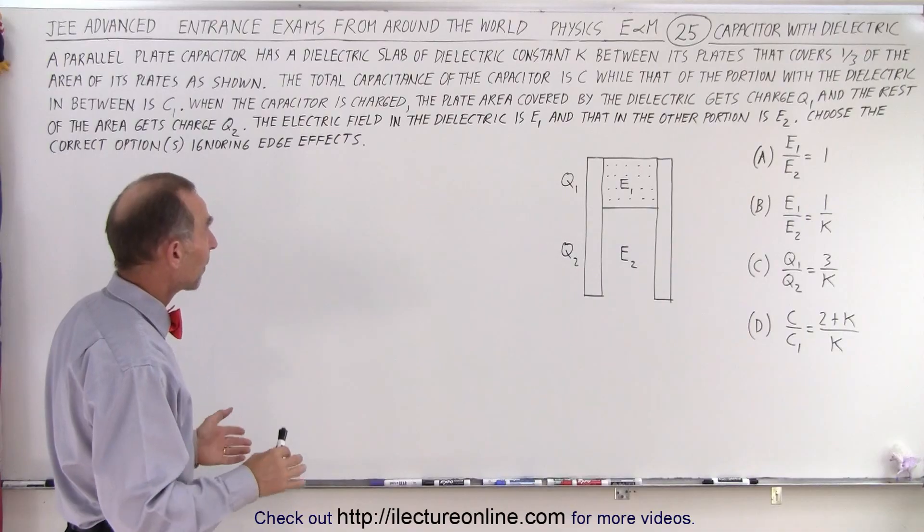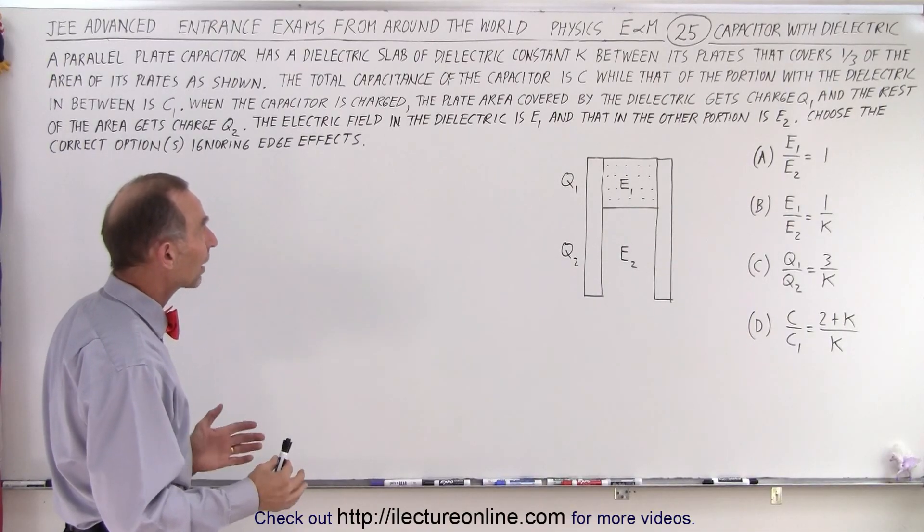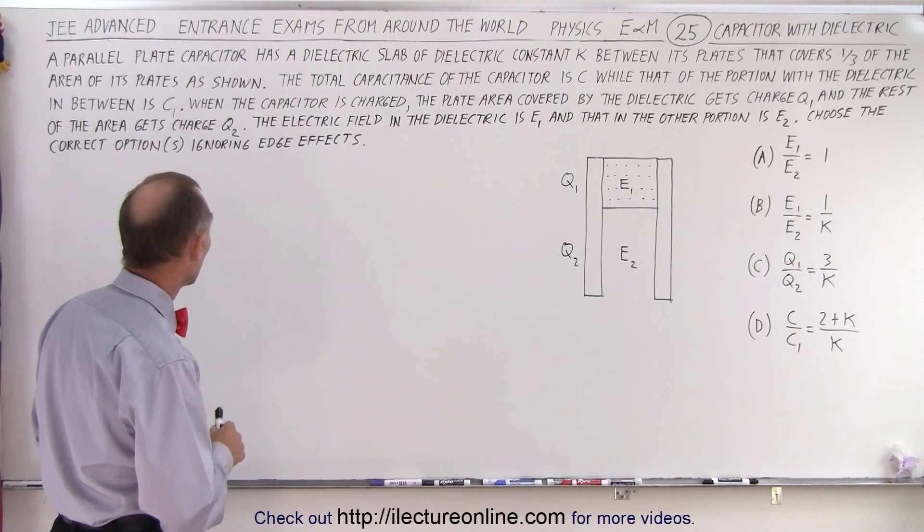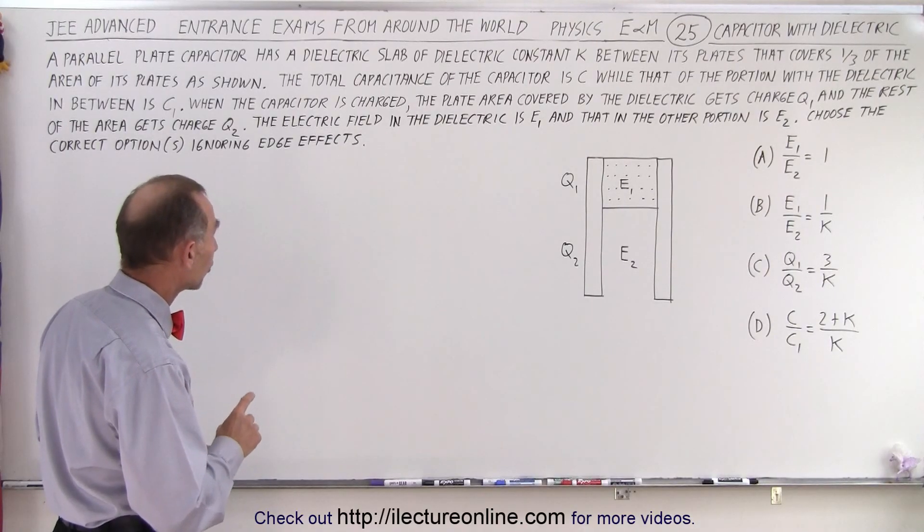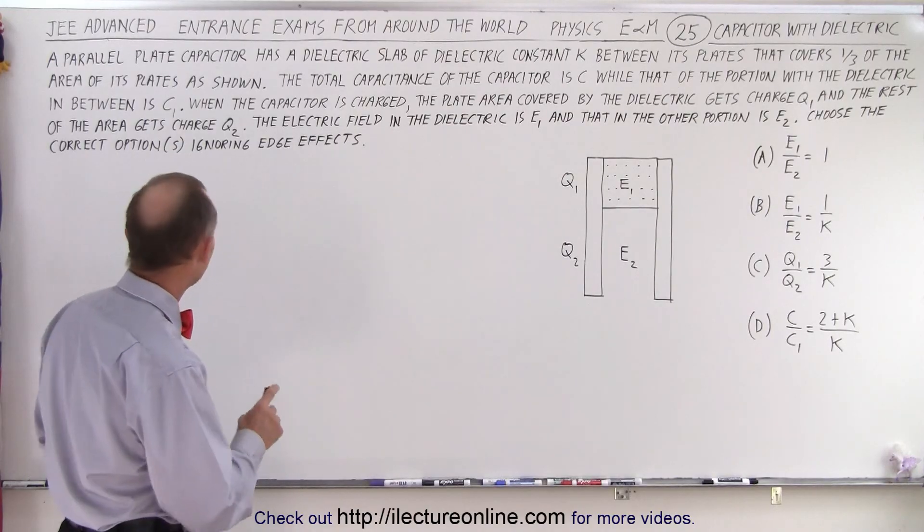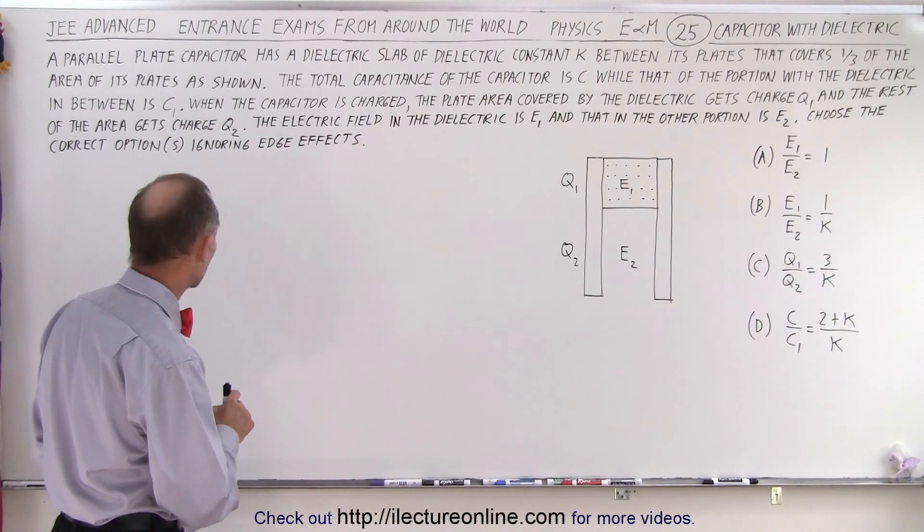The total capacitance of the capacitor is C, while that of the portion with the dielectric in between is C1. When the capacitor is charged, the plate area covered by the dielectric gets charged Q1 and the rest of the area gets charged Q2.